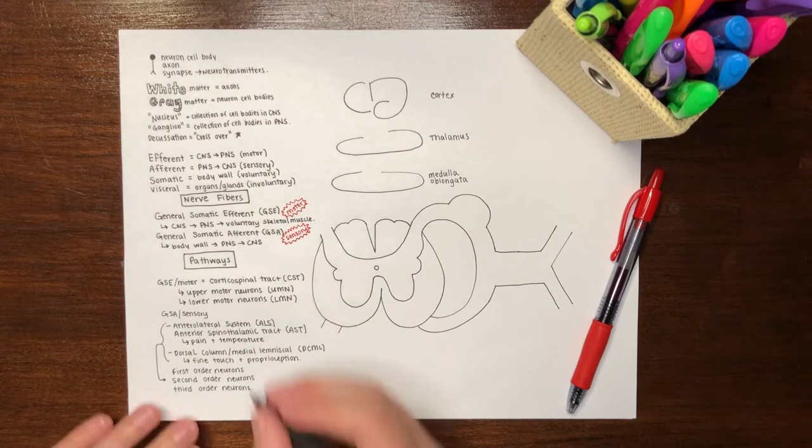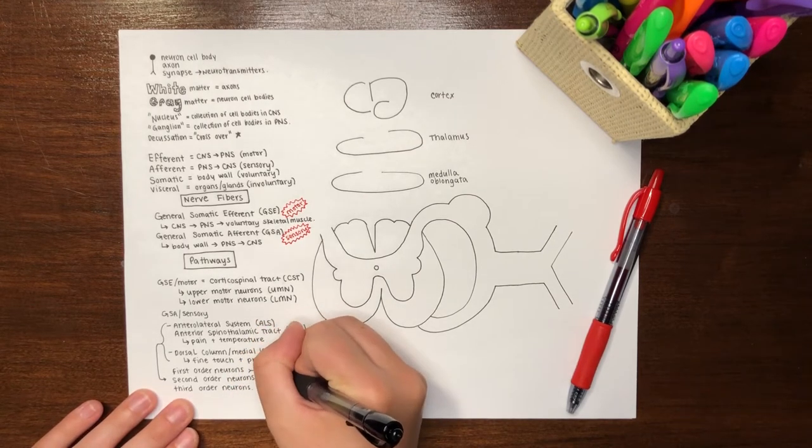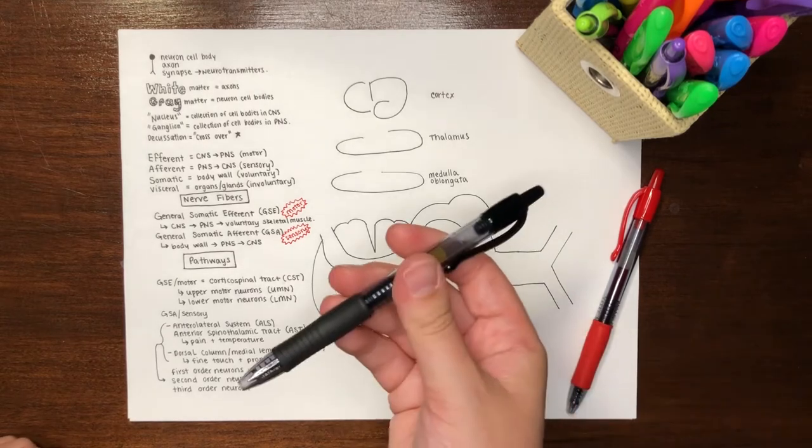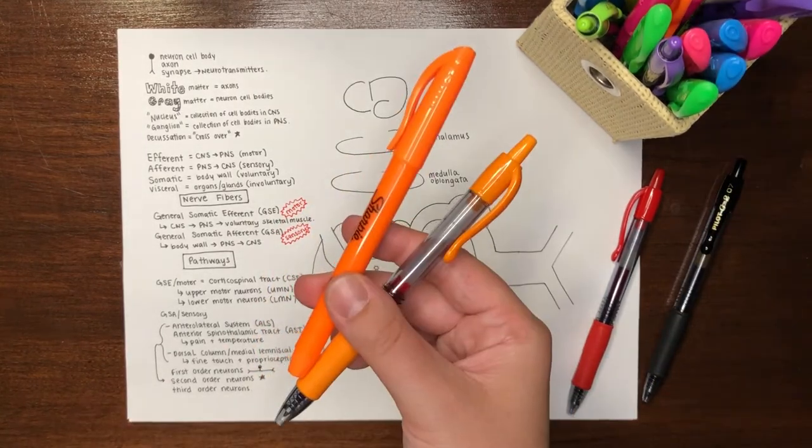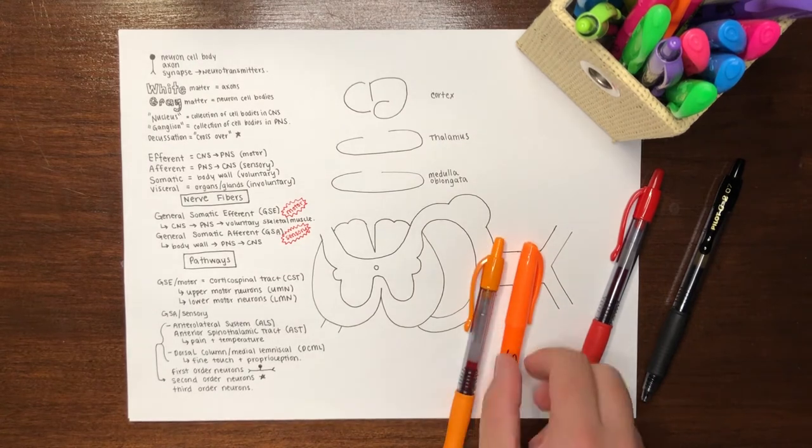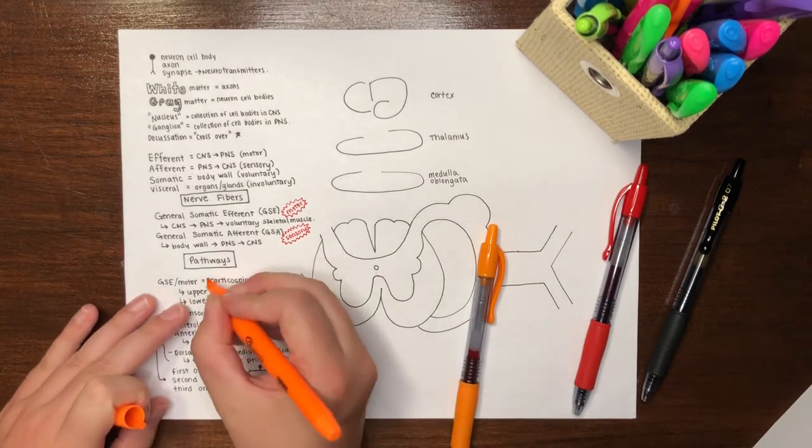In these pathways, the first-order neuron is typically a pseudounipolar neuron, where the cell body extends off of the axon so that the signal can travel freely from one end to the other. Additionally, the second-order neurons in these chains will cross over to the other side of the body.